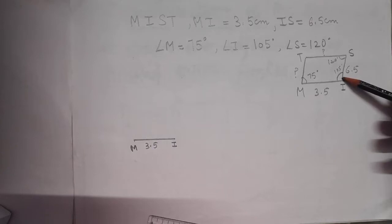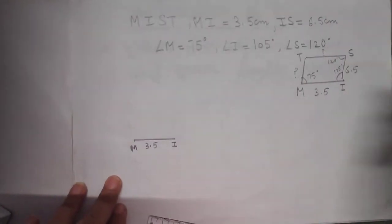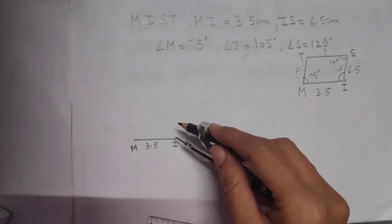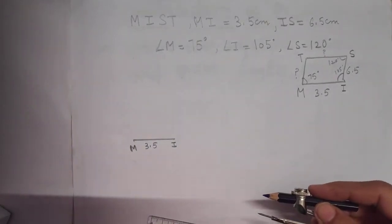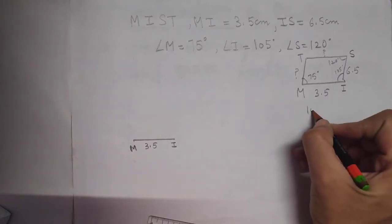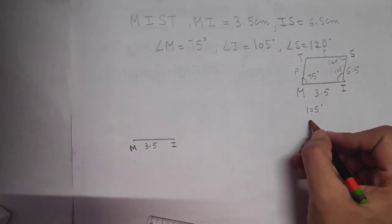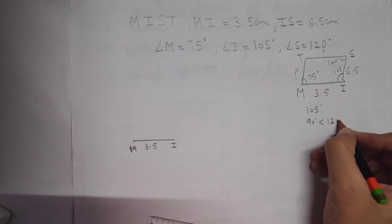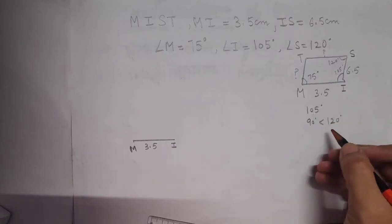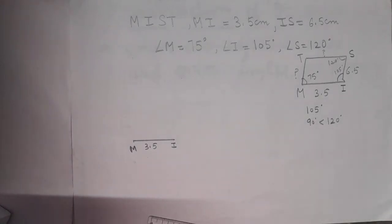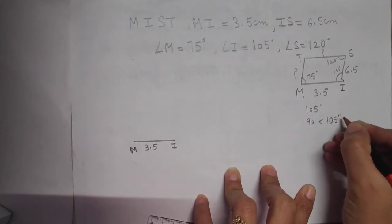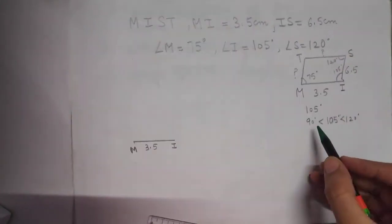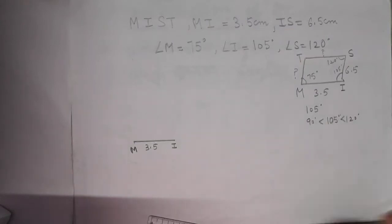I am making 105° at point I. Now I am going to make a semicircle at I, then a 60° arc, then a 120° arc. The 105° angle lies between 90° and 120°. So we are supposed to make 105° between the 90° and 120° angles.